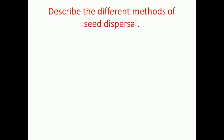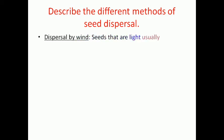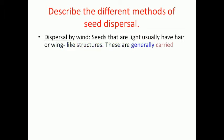Next question: describe the different methods of seed dispersal. I am giving you notes to write. Seed dispersal by wind — seeds that are light usually have hair or wing-like structures, and these are generally carried away by the wind.